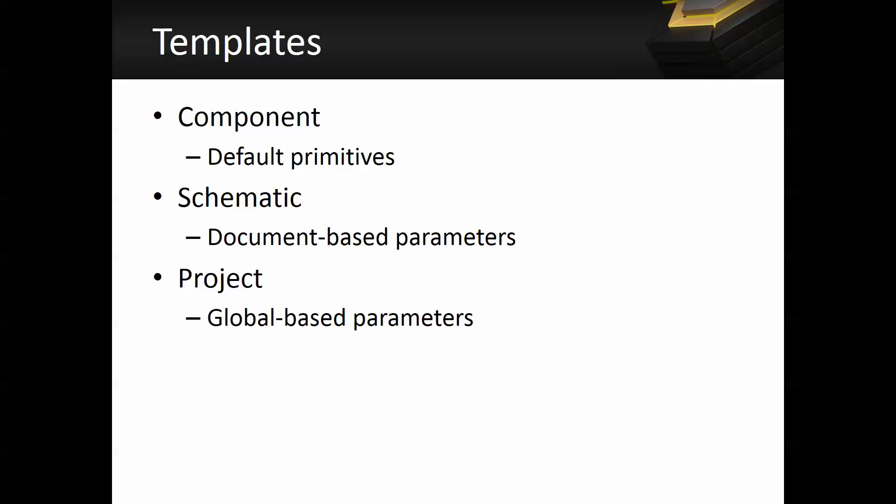For components, you can define a part or every single symbol that you create as a default primitive. You can also have document-based parameters as well as company logo in your schematic templates. For projects, you can define global-based parameters so that every single schematic document as well as PCB document would refer to what we call a global-based parameter that essentially shares one single value throughout the entire project.